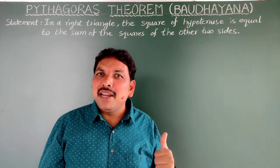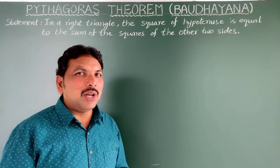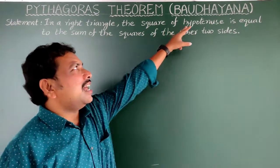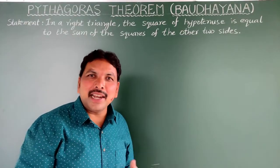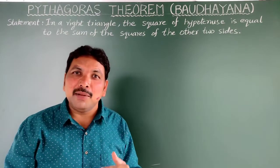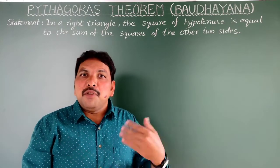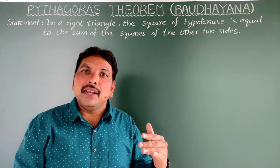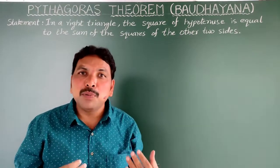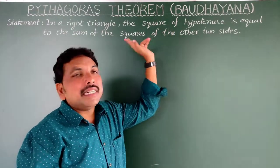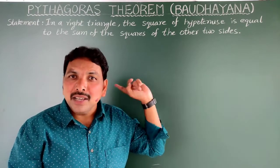I'll explain a familiar theorem in mathematics, which is the Pythagoras theorem. Pythagoras theorem is also called as Baudhayana theorem. Why? Because before Pythagoras — which means in 800 BC itself — our ancient Indian mathematician Baudhayana has proved this theorem. That's why sometimes it is also called as Baudhayana theorem.